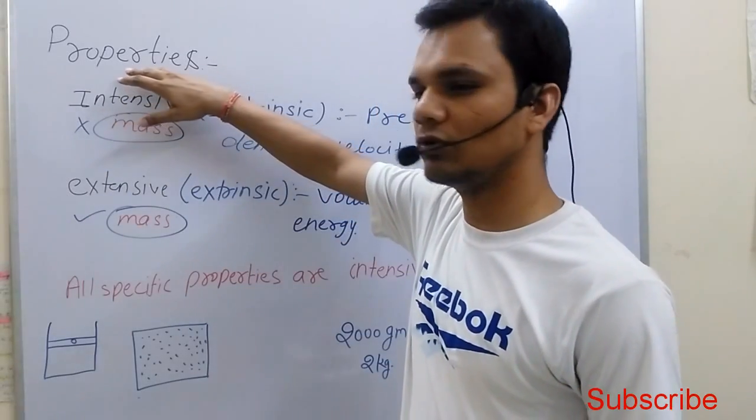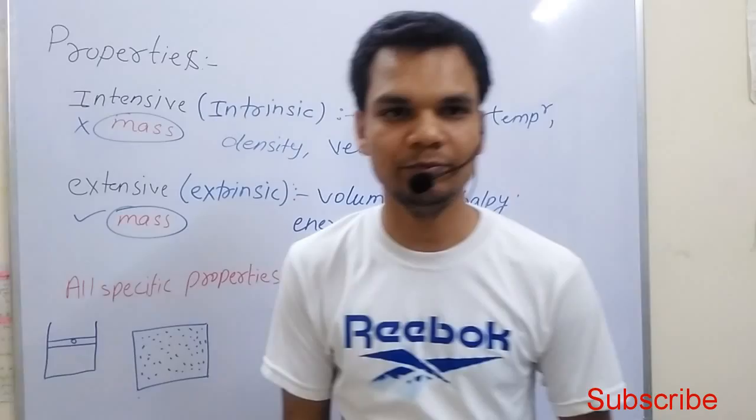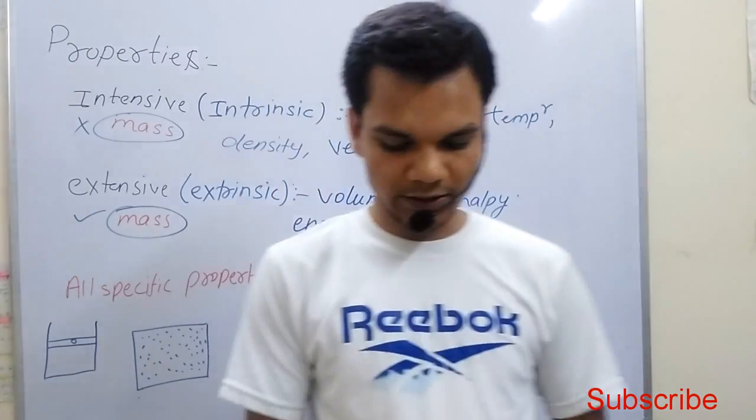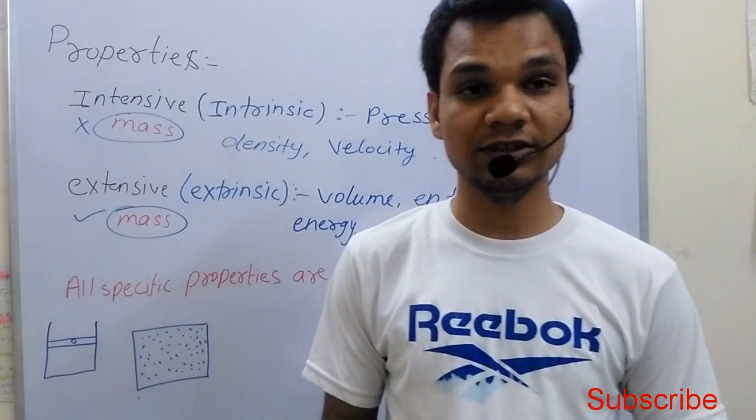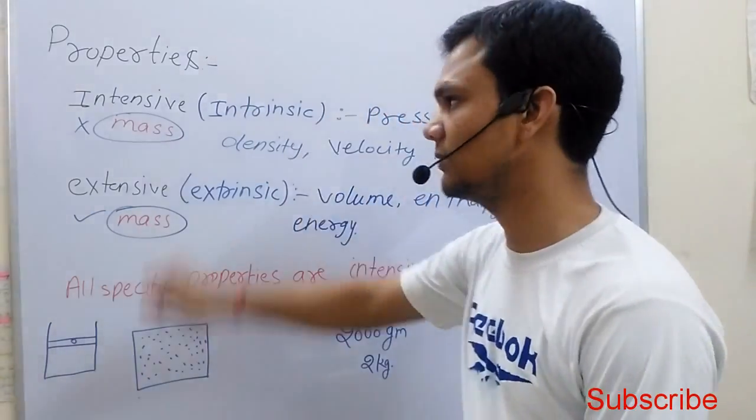We discuss the properties of the system. Any condition of the system is called the state of the system. The state of the system is specified by characteristics of the system. Any characteristic of the system is called a property of the system.